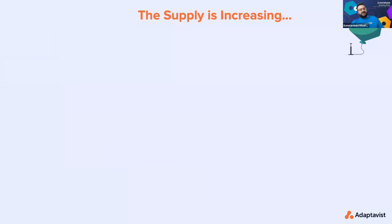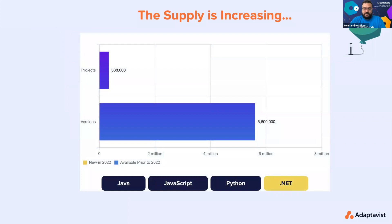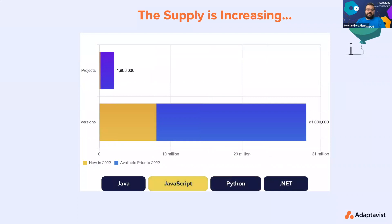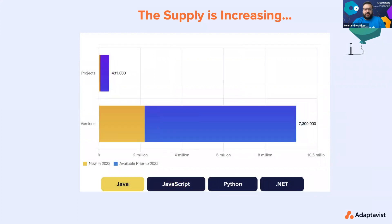Even though there are risks involved with open source, the supply of open source is increasing. .NET saw a 5% decline in projects but is still very high at about 6 million versions and almost 400,000 projects. Python saw an 18% project increase with 700,000 new versions added. JavaScript had a 9% project increase and a whopping 8 million new versions. Java saw a 14% project increase and over 2 million new versions added to the already 7.3 million versions.